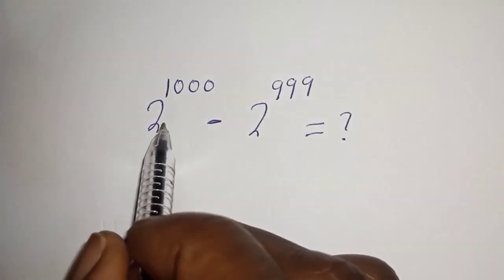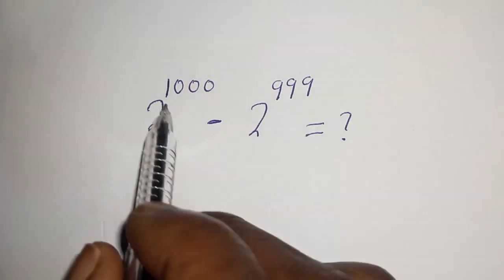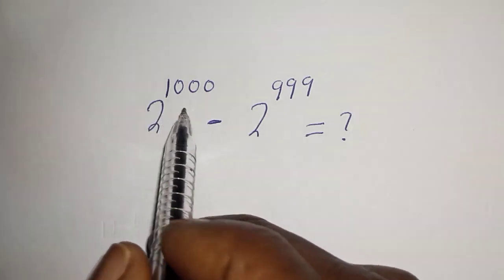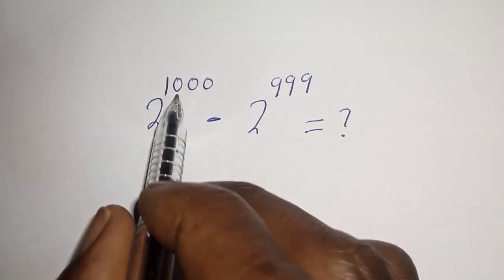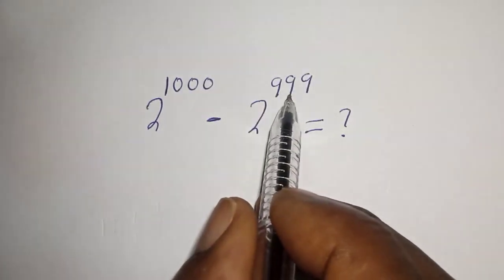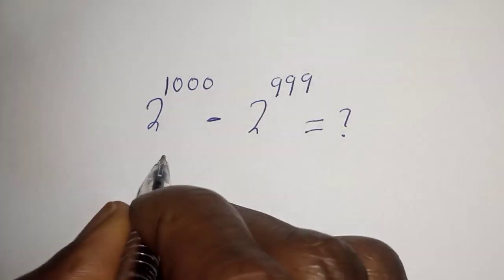Hello, welcome to Math Gist. In this class we quickly want to simplify this nice math problem without using a calculator: 2 raised to the power 1000 minus 2 raised to the power 999 is equal to what?